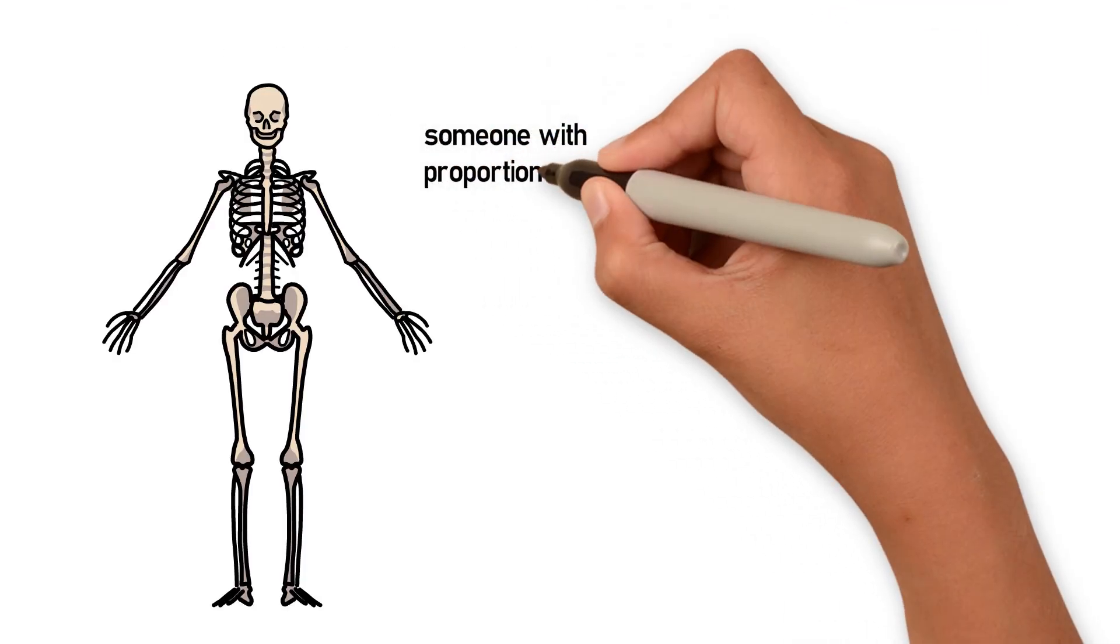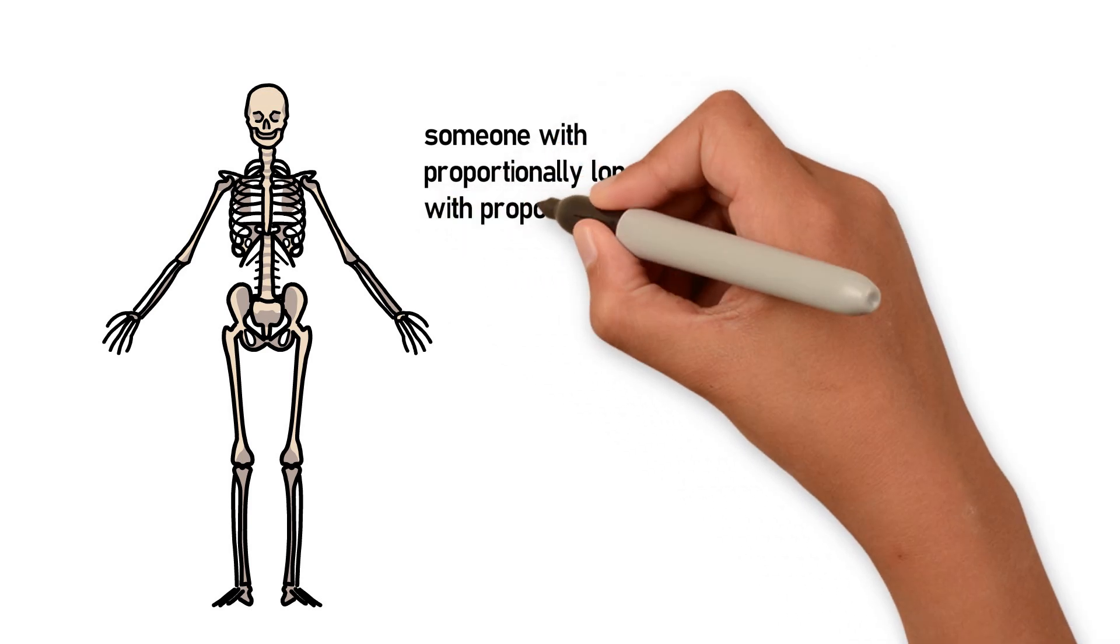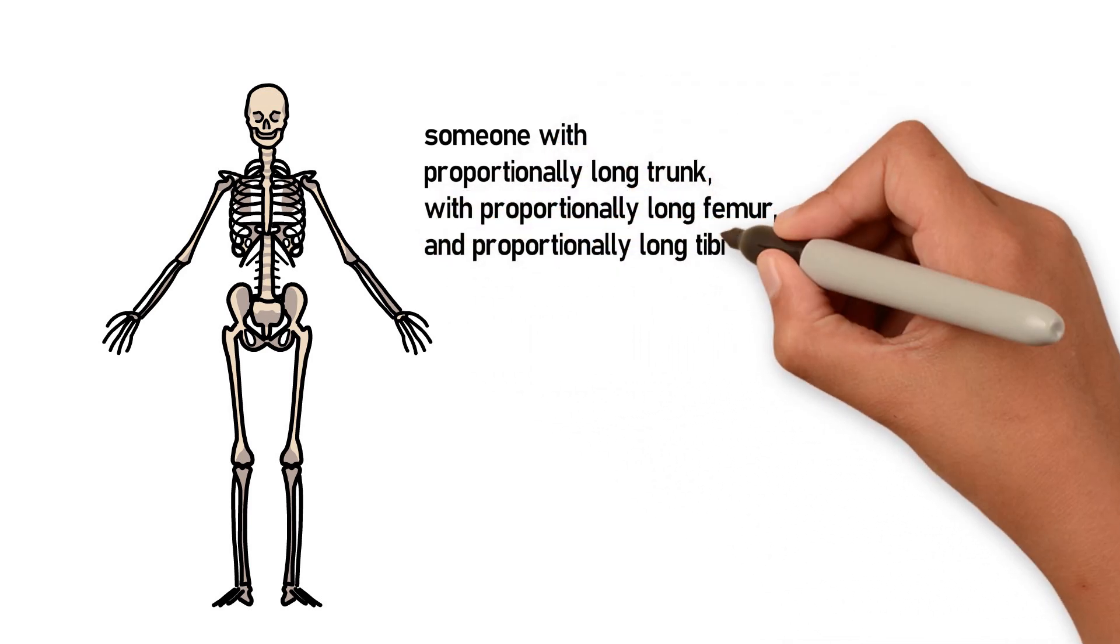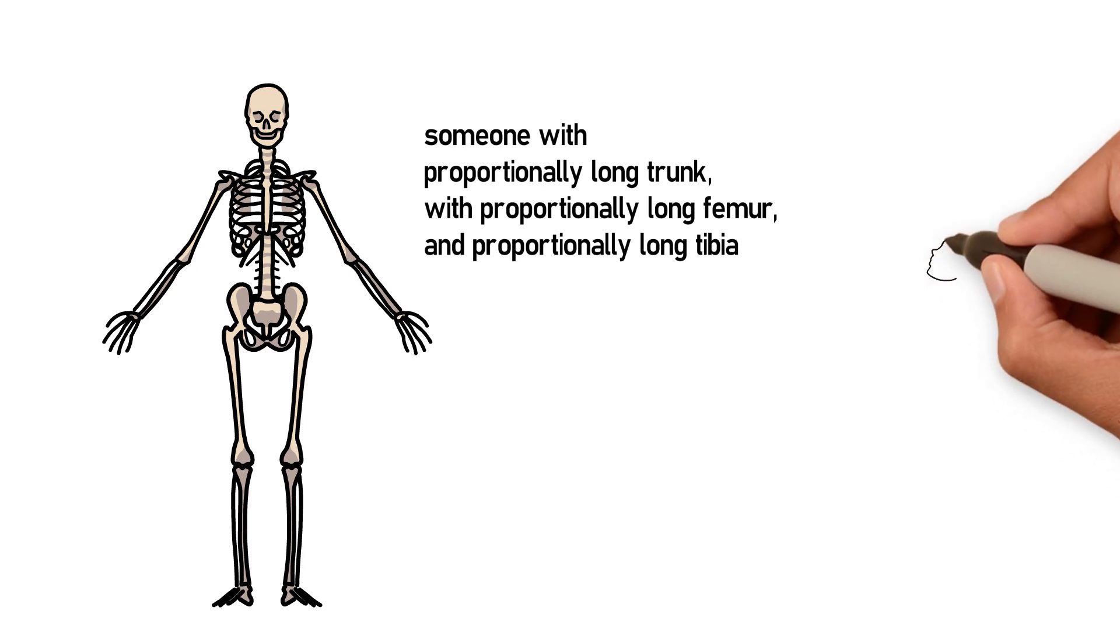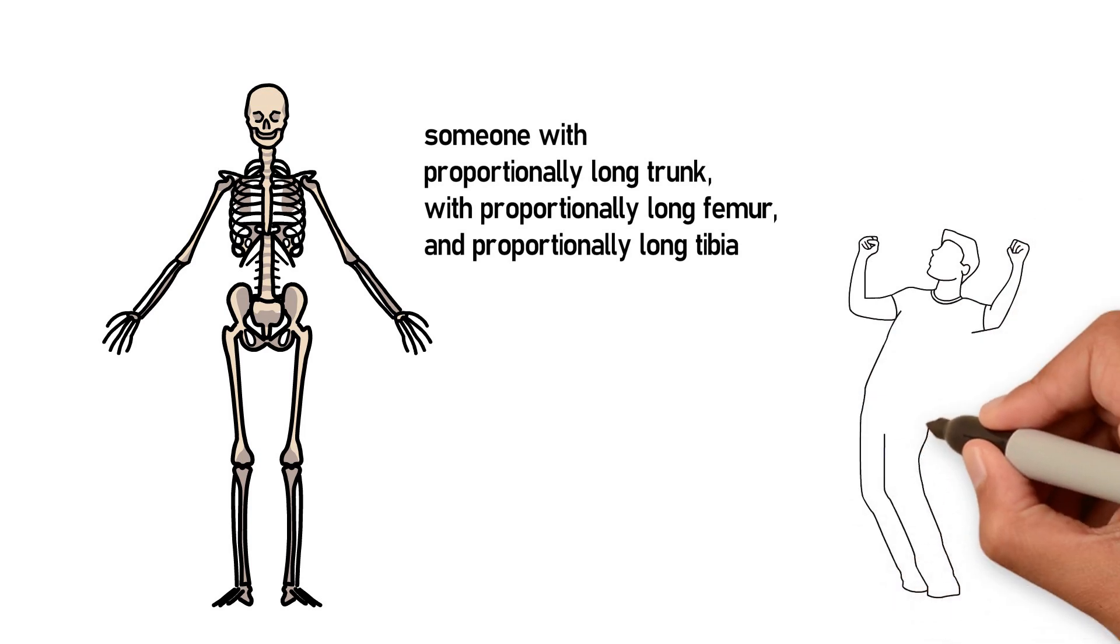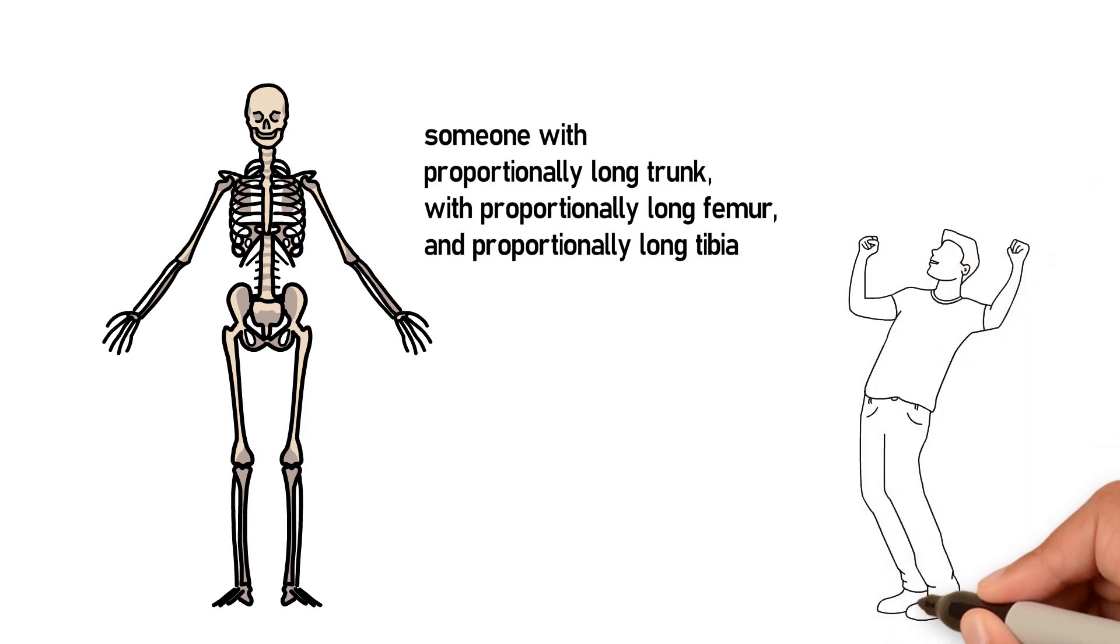Now compare it to someone who have proportionately long trunk to proportionately long femur and proportionately long tibia. Not only can they lower into a full squat easily, their load will also be evenly distributed between their back, hips and legs. Squat is a perfect exercise for them.